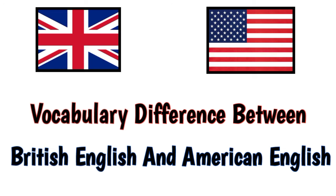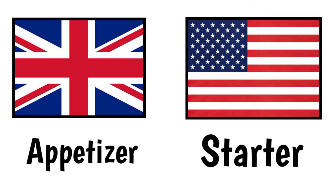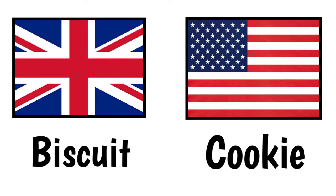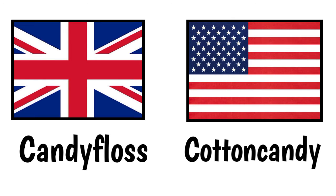Vocabulary differences between British English and American English. British English: Appetizer — American English: Starter. British English: Biscuit — American English: Cookie. British English: Candy Floss — American English: Cotton Candy.